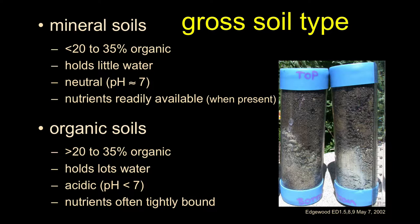Mineral soils tend to be relatively depauperate in organics — more typical of a terrestrial site. They tend not to hold water well, tend to be pH neutral, and nutrients, if present, are readily available but not bound. So if it rains, we can suddenly get a huge pulse of nutrients washed out, and then there's not a whole lot left.